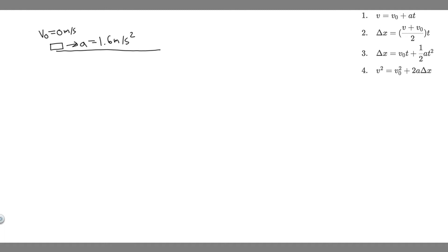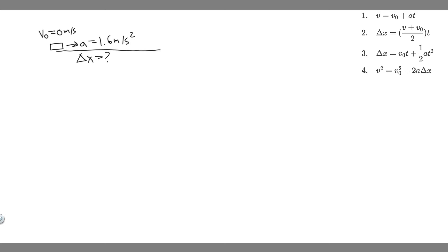Let's go ahead and draw what's going on. Imagine the square is the toboggan. We know the initial velocity is going to be 0 meters per second because the child is starting at rest. We know they're going to accelerate at 1.6 meters per second squared. What we're trying to do is find how far they travel in different time intervals — basically solve for delta x, the change in her position, which is the distance.